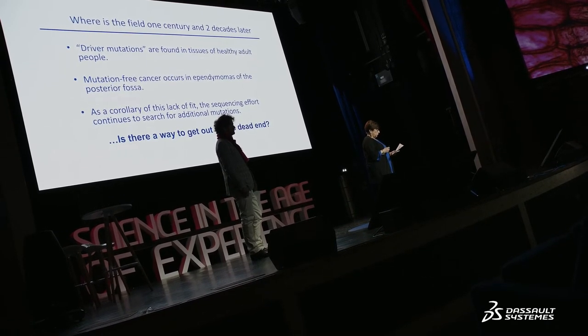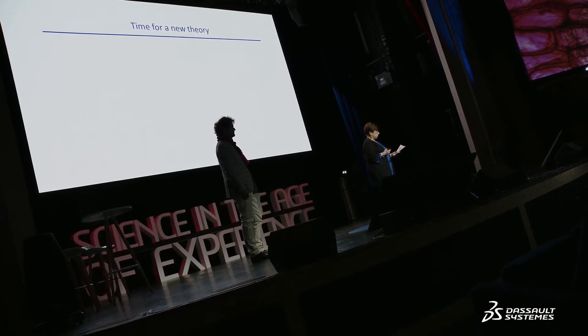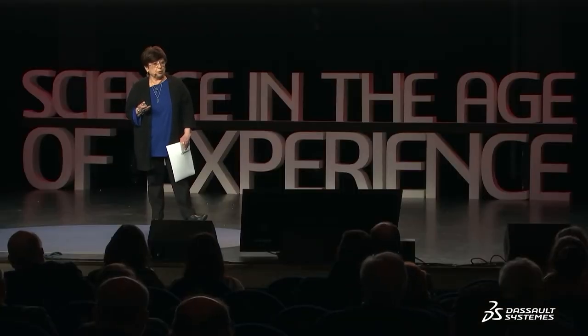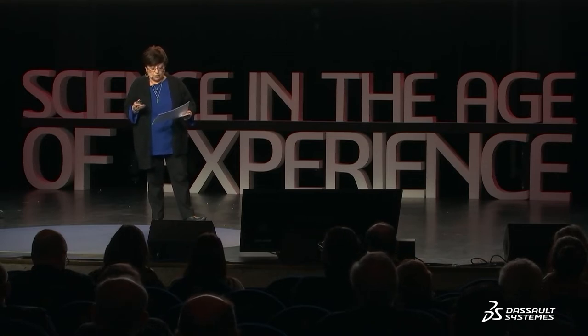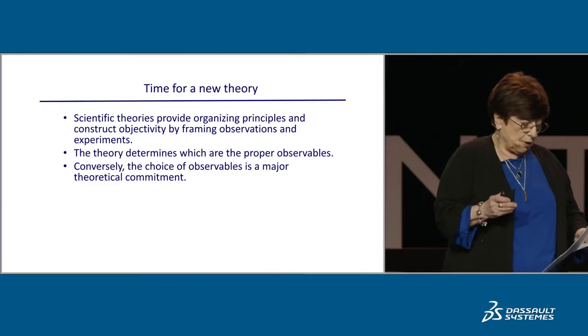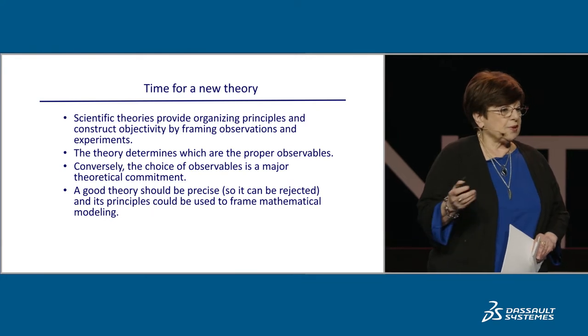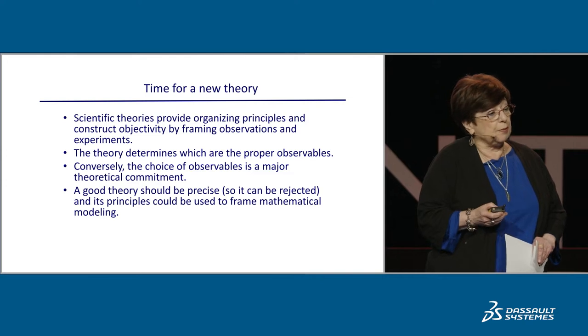How do we get out of this dead end? We think it's time for a new theory. Biology has to embrace serious, precise theories. Scientific theories provide organizing principles and construct objectivity by framing observations and experiments. The theory determines which are the proper observables — for instance, in classical mechanics, the atom is not an observable. We have to be strict as physicists; otherwise, the theory is just a hunch and can never be proven wrong. The choice of observables is a major theoretical commitment, and a good theory should be precise so it can be rejected, and its principles used to frame mathematical modeling.